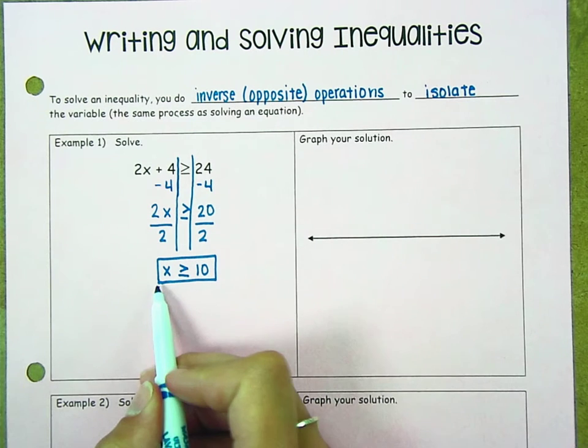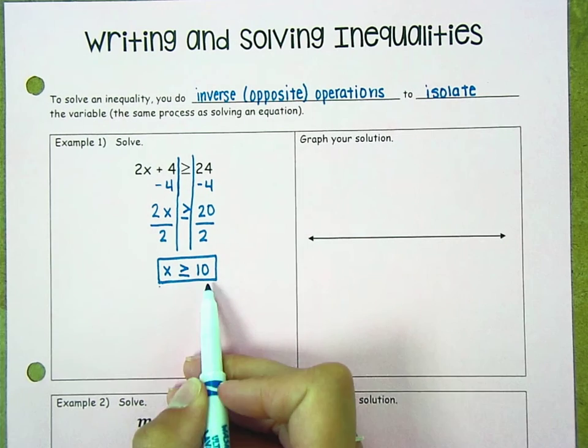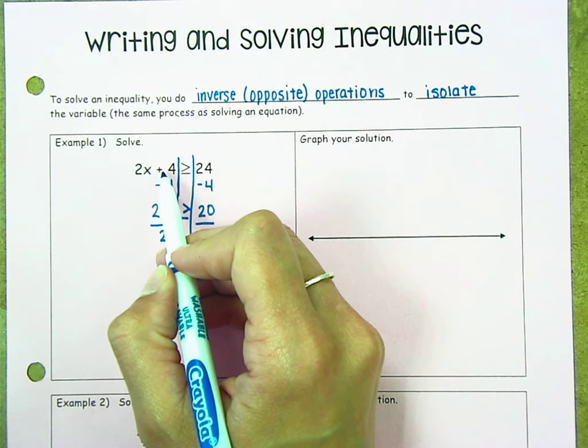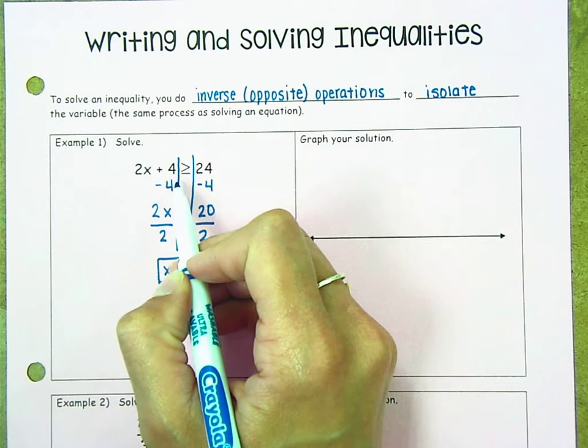x could be 11 because 11 is greater than or equal to 10. 2 times 11 is 22 plus 4 is 26, which is greater than or equal to 24.